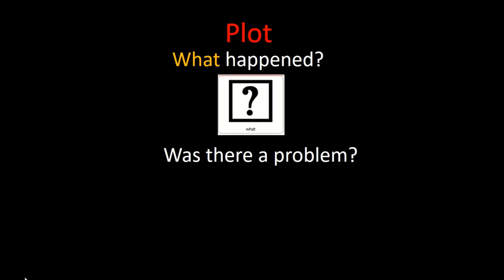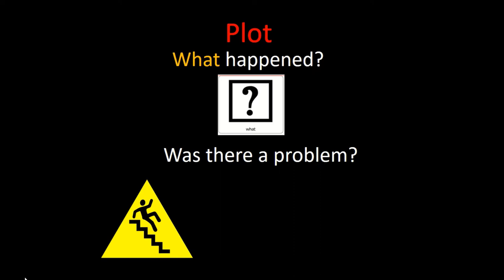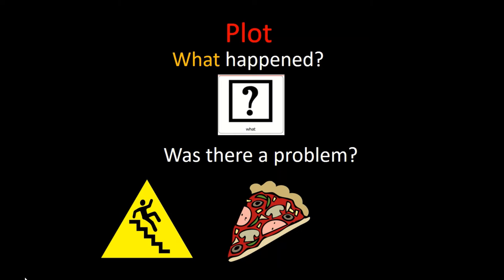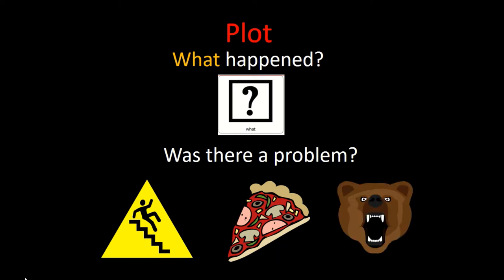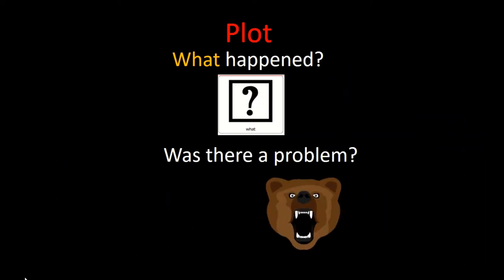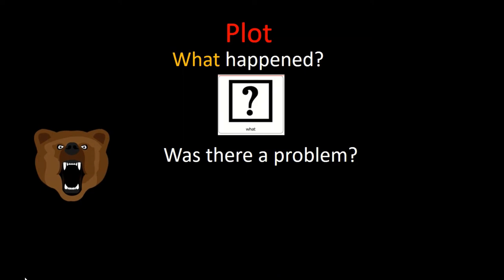A lot happened in this story, and there was a problem that our mouse had. What happened in our story? What was the problem? Did the mouse fall down while he was trying to climb up the ladder to get the strawberry? Did he say, I don't want a strawberry, I want pizza instead? Or was he afraid that the big hungry bear was going to get his strawberry? If you guessed that he was afraid the big hungry bear was going to get his strawberry, you were right.